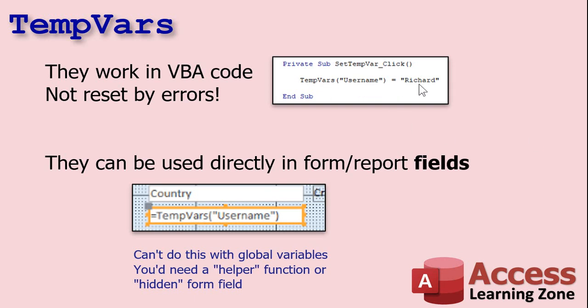So let's talk about the skinny on TempVars. You use TempVars like this: you say TempVars, put parentheses and quotes around the name — for example, TempVars("Username") — and set it equal to a value like "Richard", a string. They work in VBA code obviously, and one of the major benefits is that they're not reset by errors. For example, if you have a global variable assigned a value and there's an unhandled error in your database — a syntax error, divide-by-zero, whatever — your global variables will reset and be blanked, whereas TempVars will survive that.